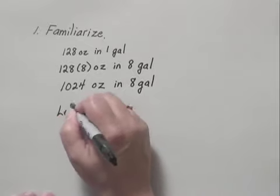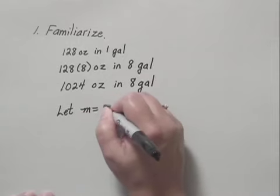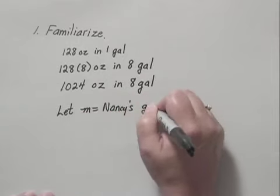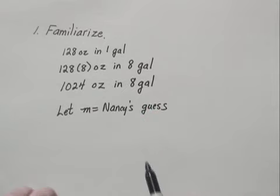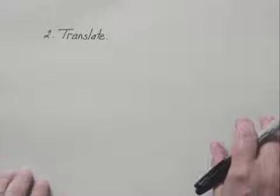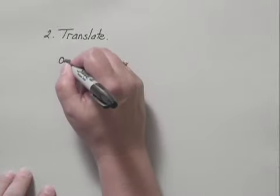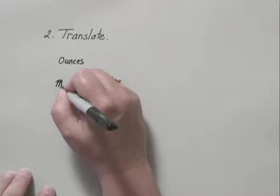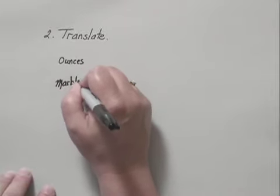Now let's let M represent Nancy's guess for how many marbles are in the 8-gallon or 1024-ounce jar. To translate, we'll use a proportion. In order to get this translated correctly, let's make sure that we have ounces in the numerator of each ratio and marbles in the denominator of each ratio.